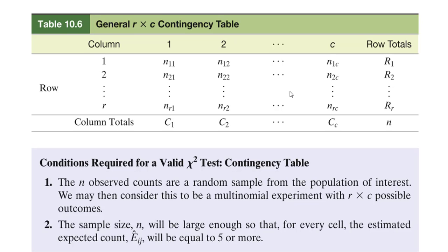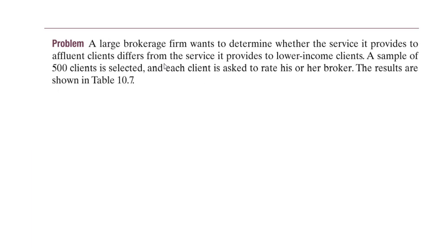The conditions required for a valid chi-square test for a contingency table are twofold. First, the observed counts must be a random sample from the population of interest — meaning the n values are randomly chosen from a population. Second, the sample size must be large enough so that for every cell the estimated expected count is equal to five or more.